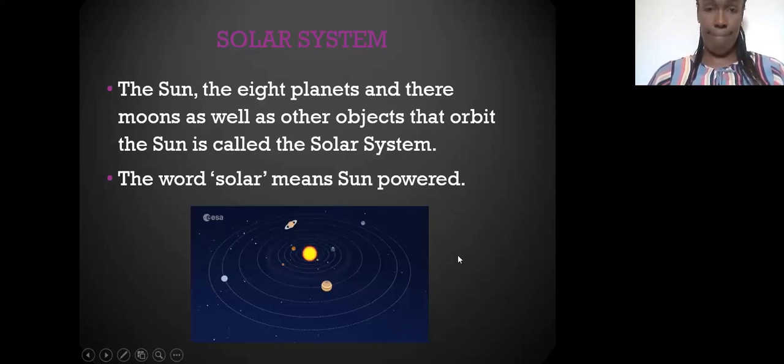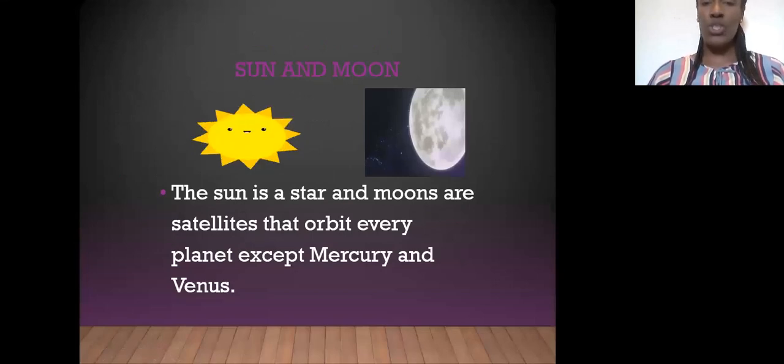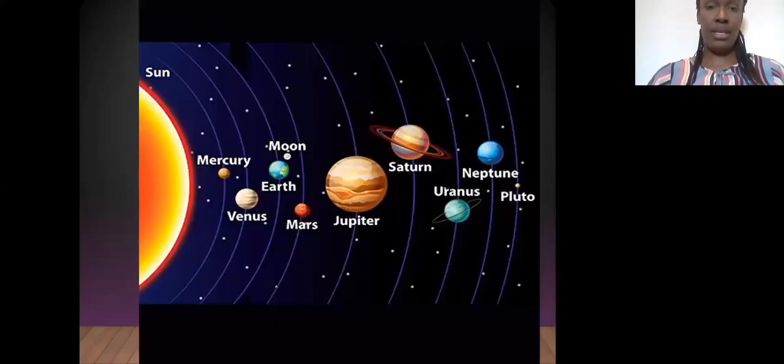Let's look at the Sun and moon. The Sun is also called a star, and the moons are satellites that orbit every planet except for Mercury and Venus.